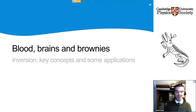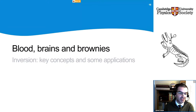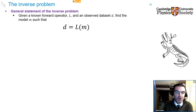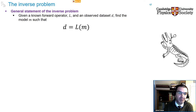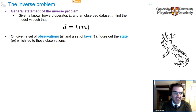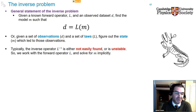That's seismic data 101. Now let's discuss the key concepts and applications behind inversion. The general statement of the inverse problem is: given a known forward operator L and an observed data set D, find the model M such that D equals L of M. In plain English: given a set of observations and a set of laws, both known, figure out the state M which leads to those observations. One could say we simply need to find the inverse operator L⁻¹, but unfortunately for the systems we'll be looking at, L⁻¹ is either not easily found or is in some sense unstable.